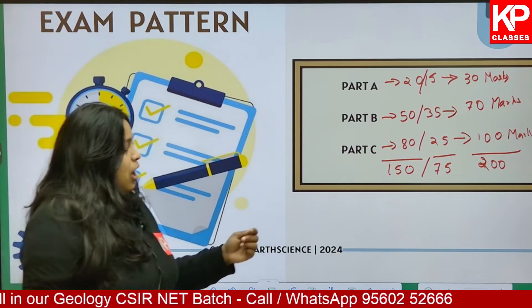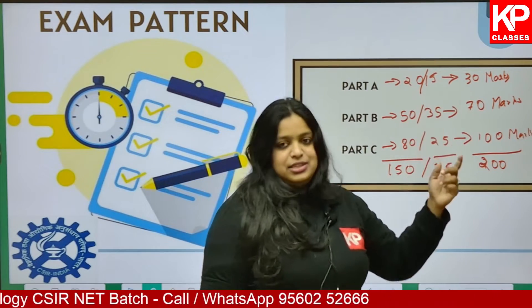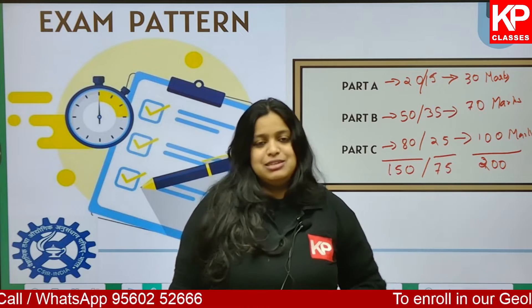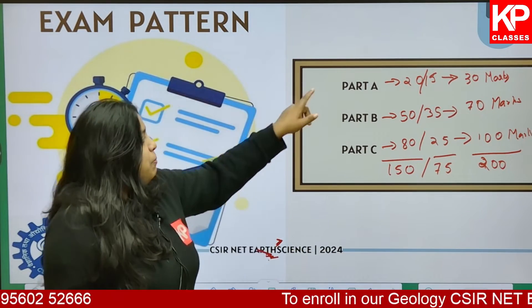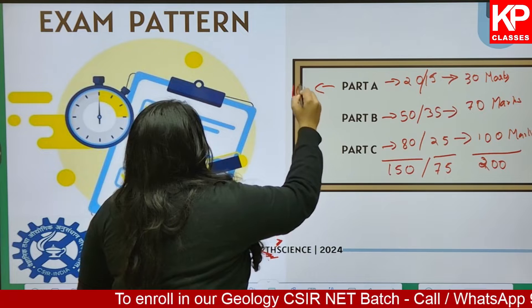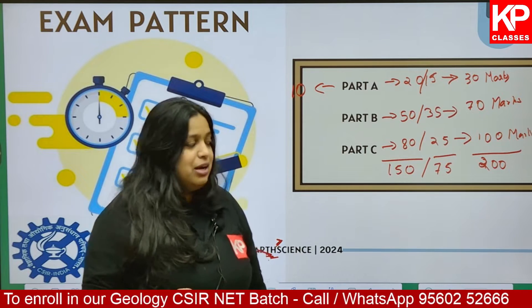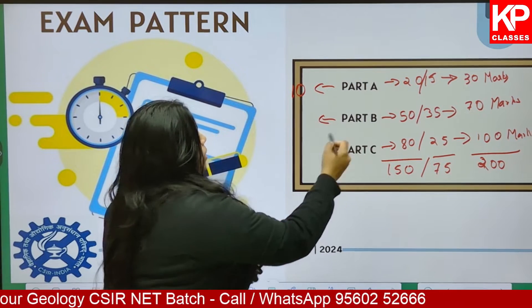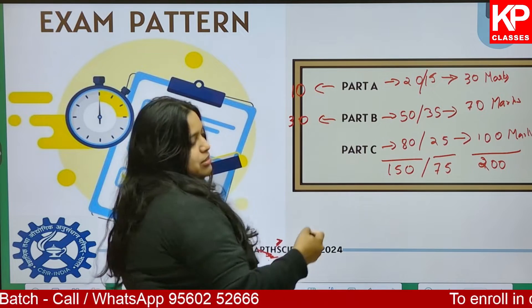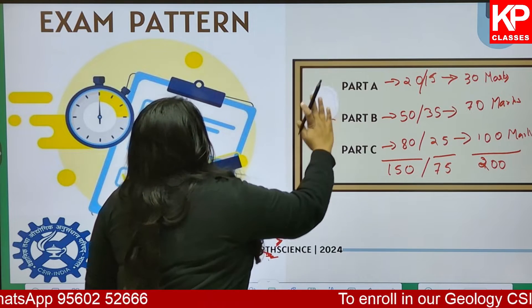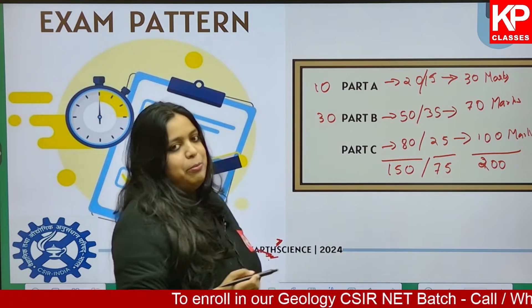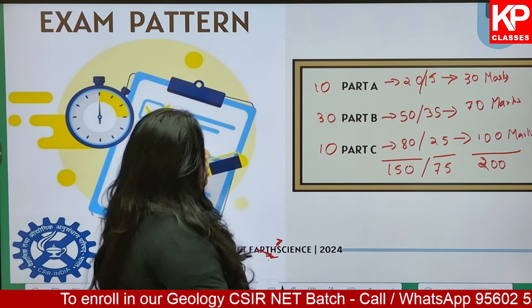You don't need to aim for 200 out of 200. For the NET CSIR examination, consider that in Part A you score around 10 marks out of the 2-mark section — that's 20 marks. In Part B, if you solve around 30 questions since it's an easier section, that gives 60 marks. From Part C, even if you solve only 10 questions, that gives 40 marks.